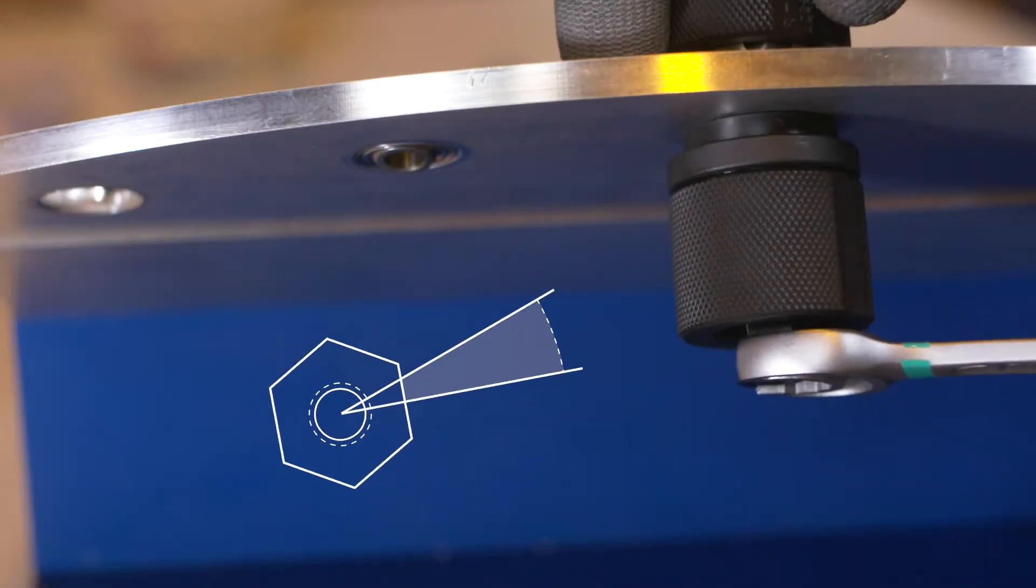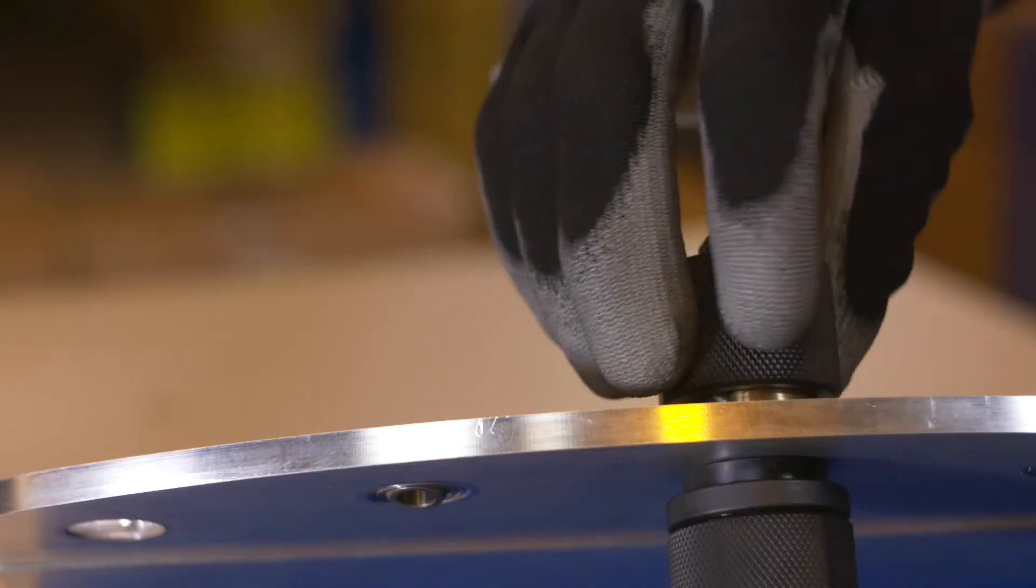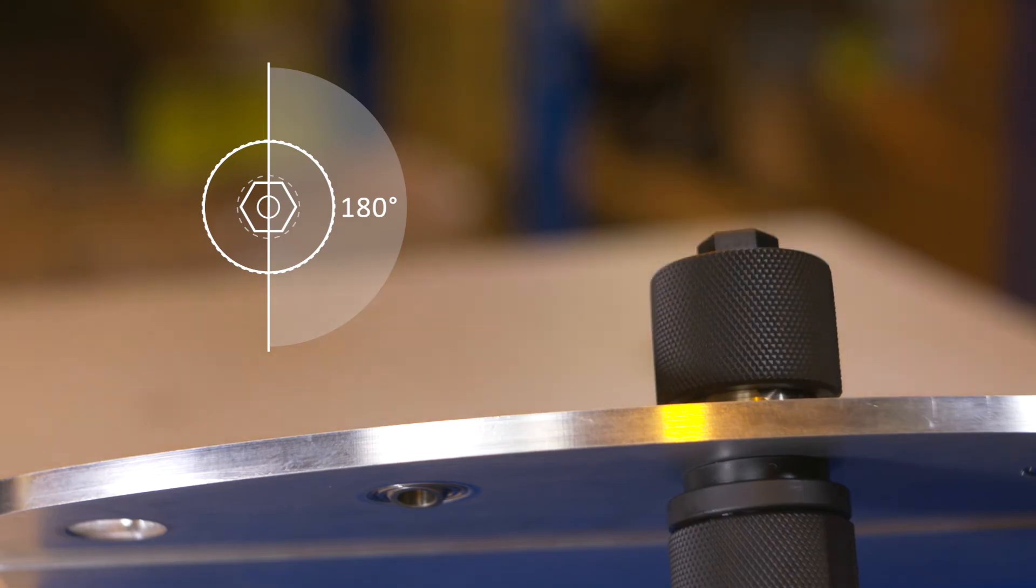Tighten the nut again approximately 30 degrees, and continue to rotate the tool until the nut has been rotated by about 180 degrees. The swage should now be completed.